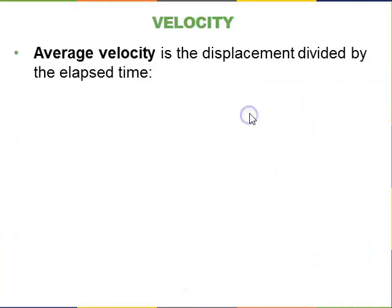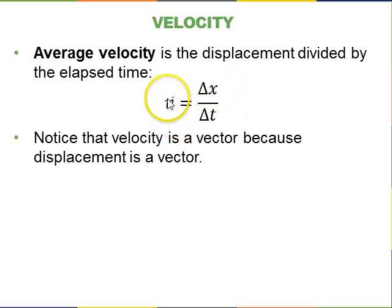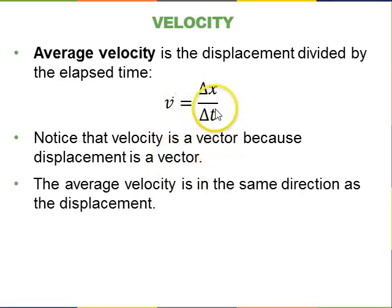Okay, so now that we have displacement and elapsed time, we can define average velocity as being the displacement divided by the elapsed time. And there's a little bar over the v indicating that this is average velocity. So notice that this velocity is a vector because displacement is a vector, and elapsed time is a scalar. So the average velocity is in the same direction as the displacement. But it's different than the displacement because it's scaled differently by the 1 over the delta t.